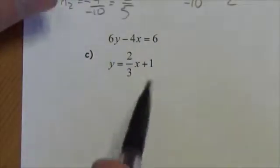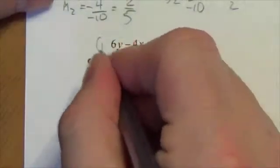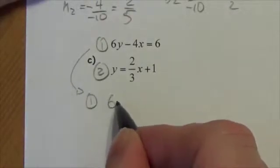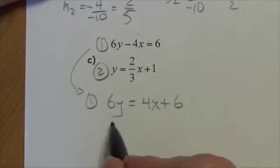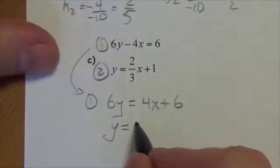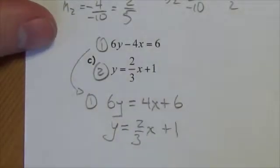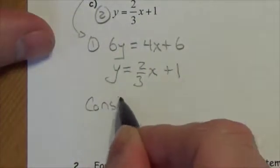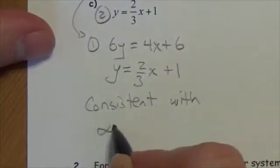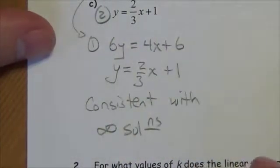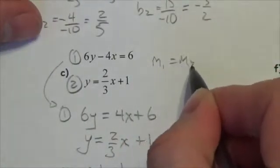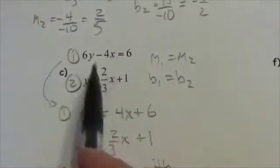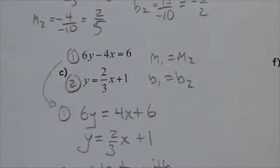For the third system, the second equation is already in slope-intercept form. Taking equation one and putting it into slope-intercept form: divide through by 6 to get y = (2/3)x + 1. These two equations are identical, so the slopes are equal and the y-intercepts are equal. This is a consistent system with infinite solutions — it's not obvious just by looking at them without doing the work, but they are the same equation.